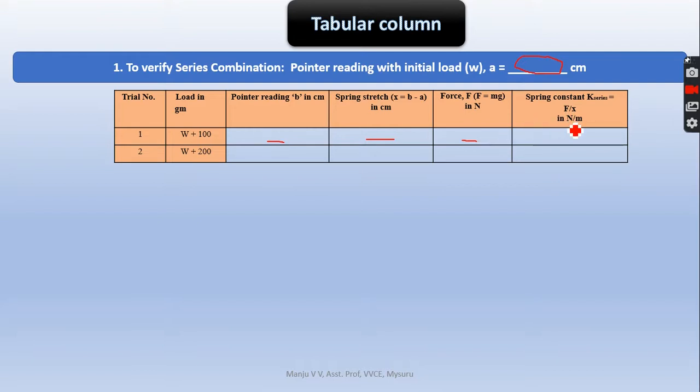Spring constant - I know F equals minus Kx, so K equals F by x. It is always a positive modulus - F by x, whatever answer you will get. For 100, also repeat the same thing. Take the average and call it as spring constant for series combination.